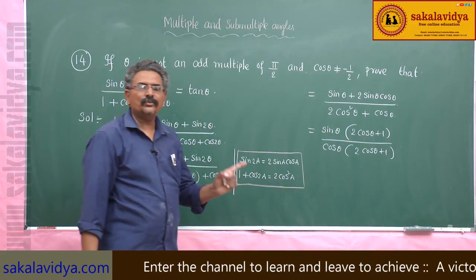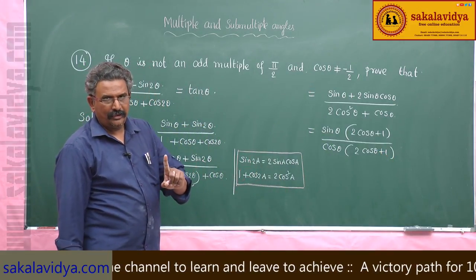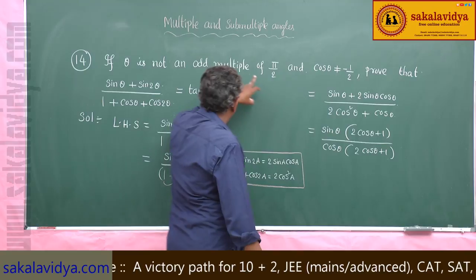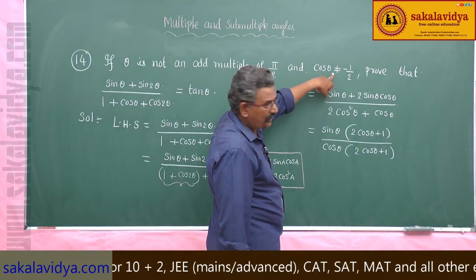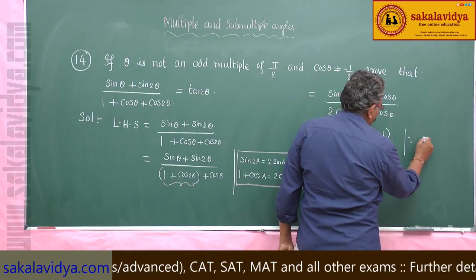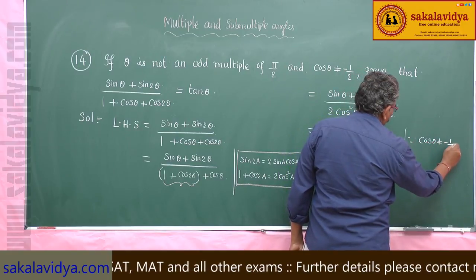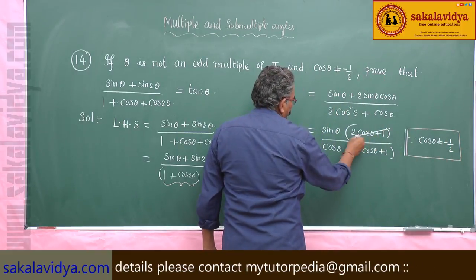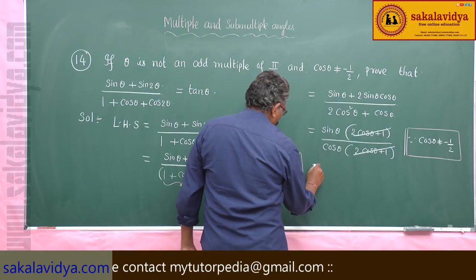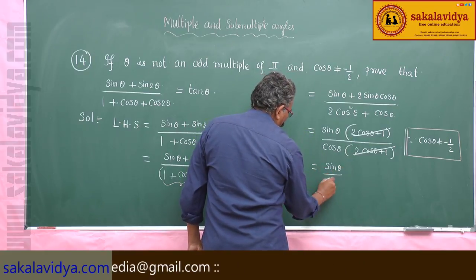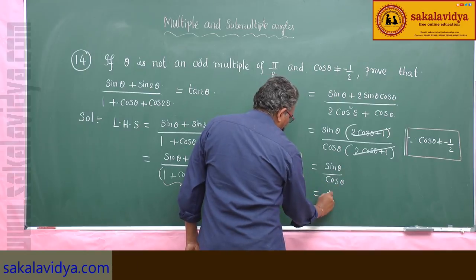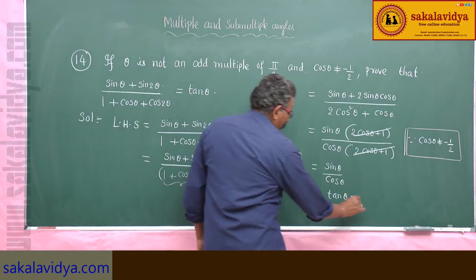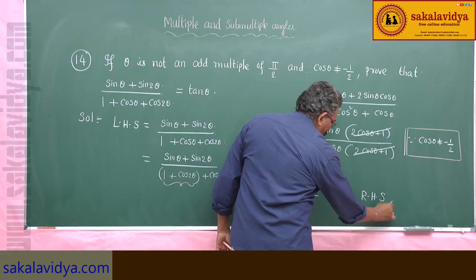Since cosθ does not equal minus 1/2, the factor (2cosθ plus 1) is not zero and can be cancelled. This gives sinθ over cosθ, which is tanθ — the right-hand side. Hence proved.